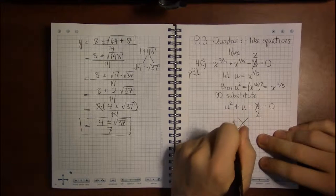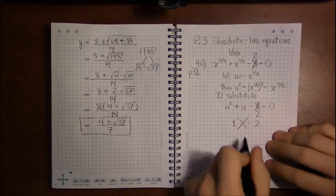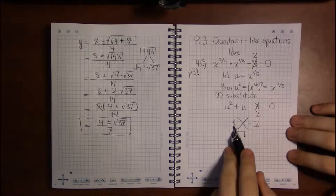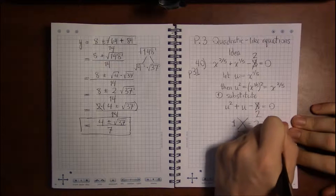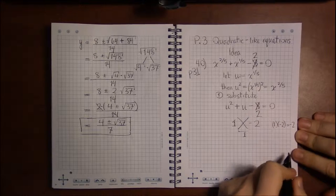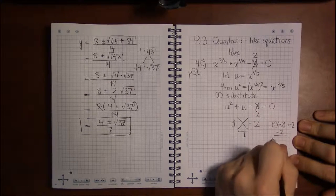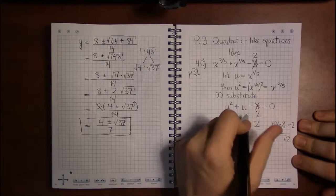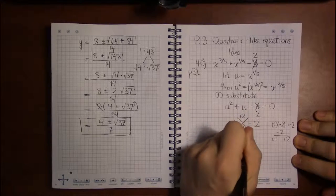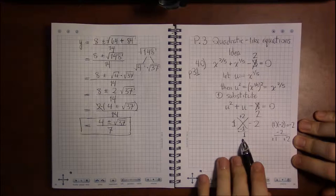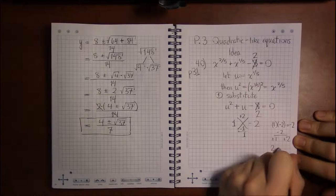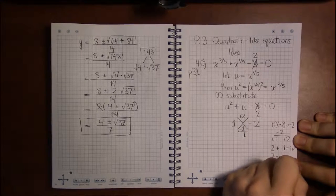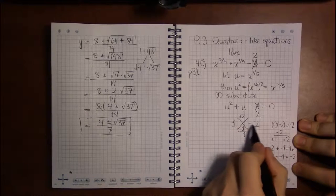So our a is one, our c is minus two, and we need to add to get b, to get one. So the numbers we can work with are the factors of one times minus two, or the factors of minus two. The factors of minus two are plus and minus one, and plus and minus two. So if we picked something like plus two and minus one, two plus minus one is one, so that works.